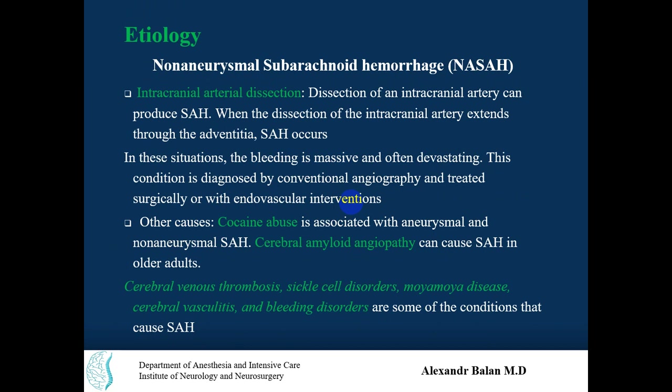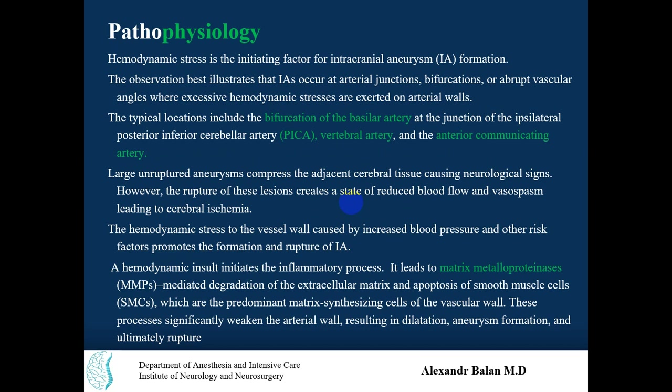Other causes of non-aneurysmal subarachnoid hemorrhage include intracranial arterial dissection, substance abuse like cocaine — which is associated with both aneurysmal and non-aneurysmal types — cerebral amyloid angiopathy, cerebral venous thrombosis, sickle cell disorders, moyamoya disease, cerebral vasculitis, and bleeding disorders.